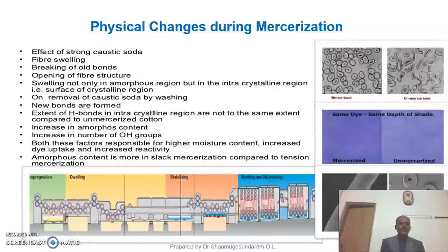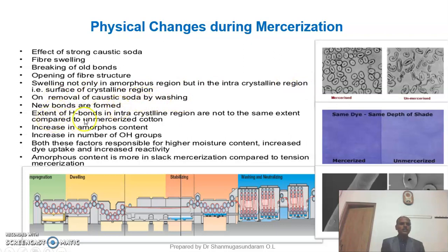Now look at the slide showing physical changes that take place during the mercerization process. The effect of caustic soda solution on cotton fiber includes: fiber swelling, breaking of old bonds, opening of fiber structure, and swelling not only in the amorphous region but also in the intracrystalline region. On removal of caustic soda by washing, new bonds are formed. The extent of hydrogen bonds in the intracrystalline region is not the same as in unmercerized cotton. There is an increase in amorphous content and in the number of hydroxyl groups — both responsible for high moisture content, increased dyeability, and increased reactivity. Amorphous content is greater in slack mercerization compared to tensed mercerization.